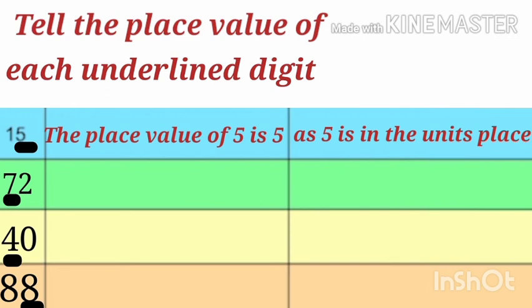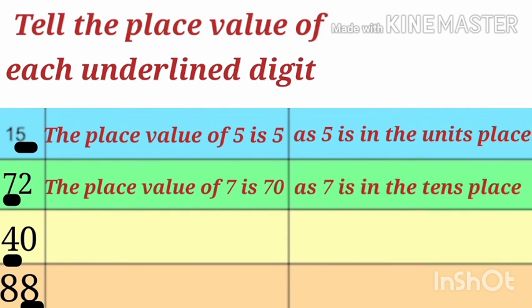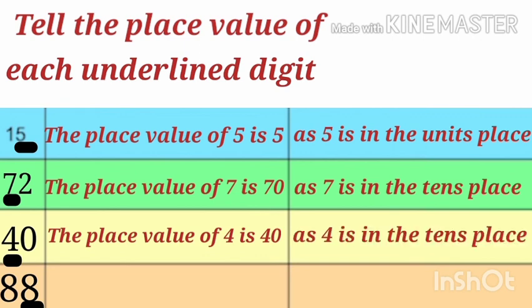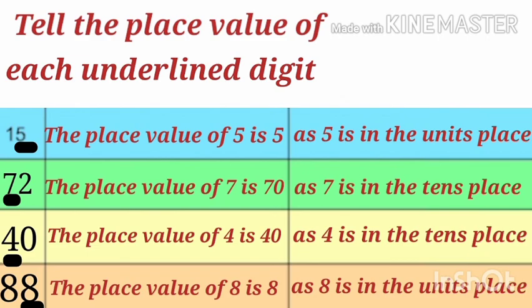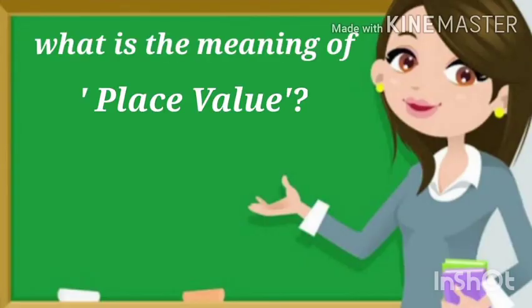Next is number 72. And underlined digit is 7. So, the place value of 7 is 70. As 7 is in the tens place. Next is number 40. And underlined digit is 4. The place value of 4 is 40. As 4 is in the tens place. In the number 88, number 8 in units place is underlined. So, the place value of 8 is 8.